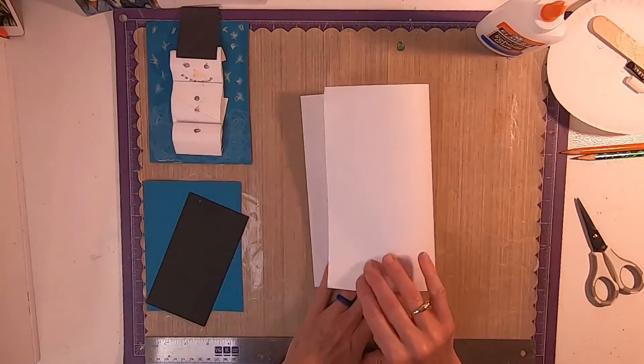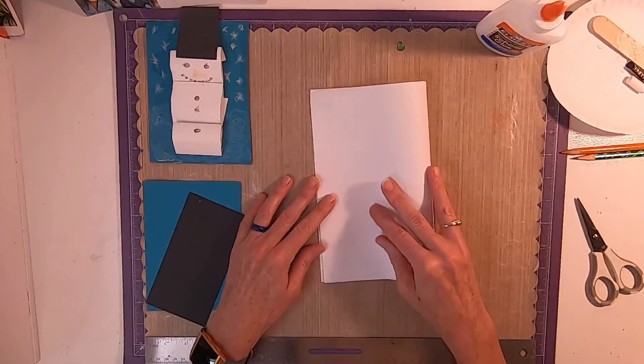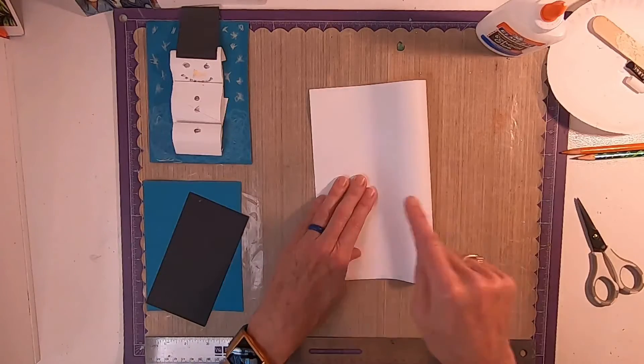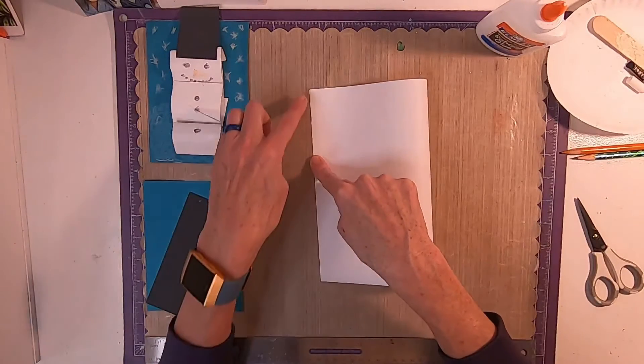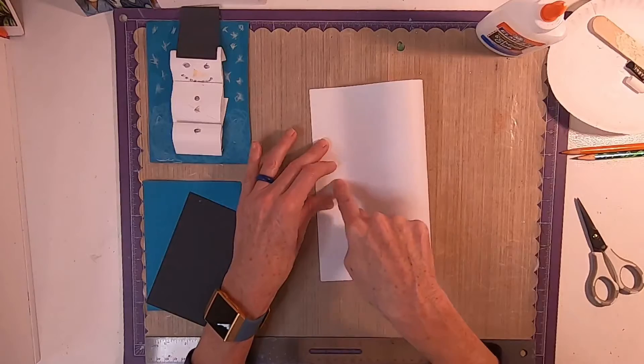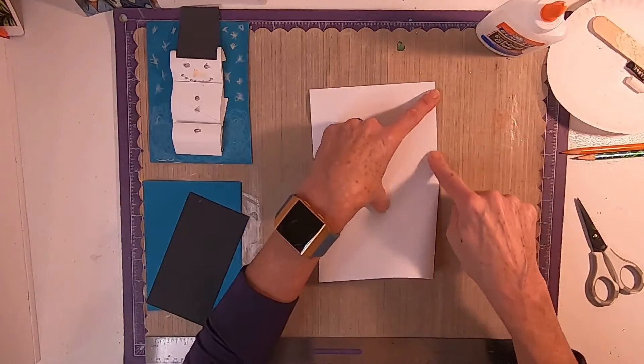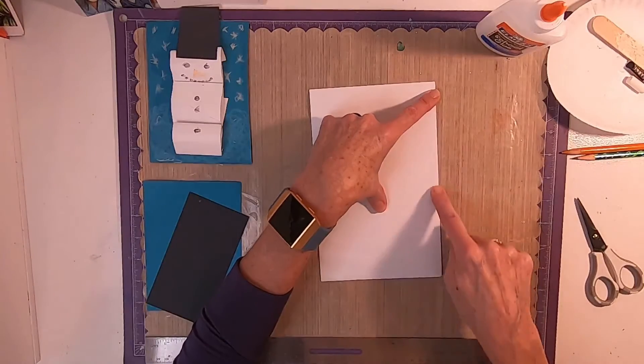So, let's give a hamburger shape to our paper. Get it even where it lines up. Take your finger, run it across, crease it, running your finger up and down.